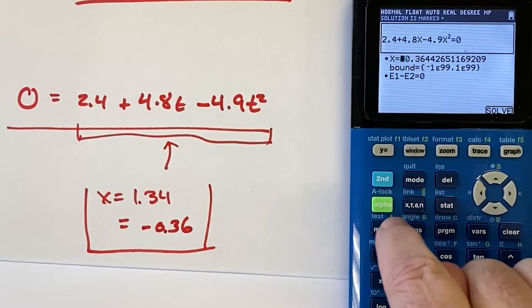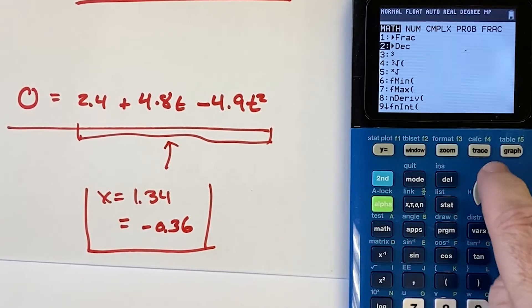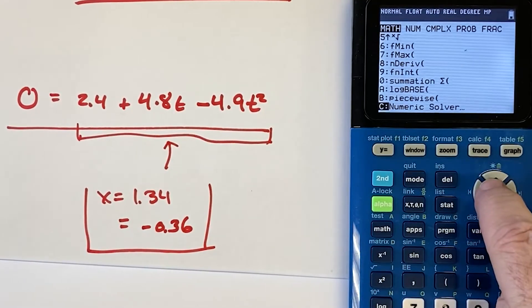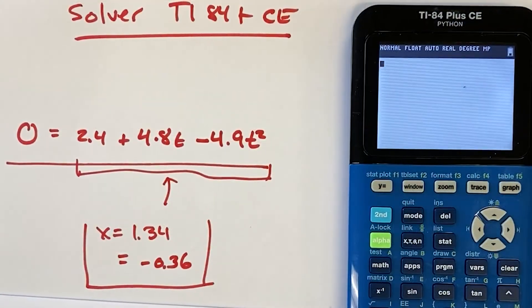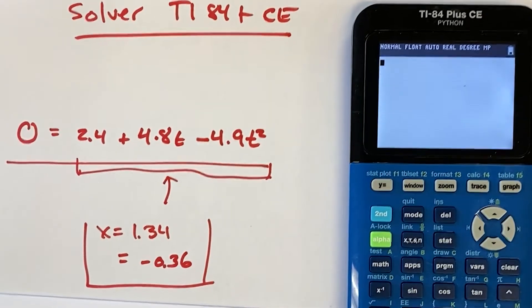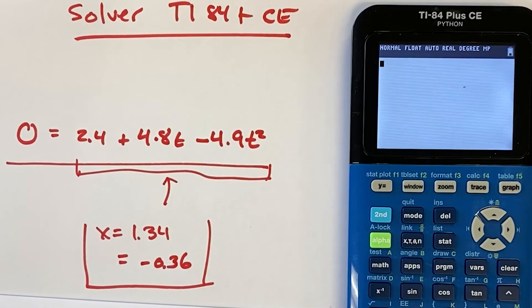Again, you go to math and you find the numeric solve, which is actually arrow up once. You get numeric solver. Then you're in there. And then you can put whatever equation you want. So there you have it. That's how you use a TI-84CE edition, the Python version, to use the solver.